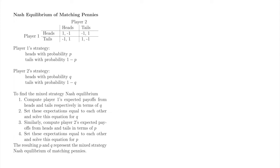If a player is not indifferent — say, player 1 strictly prefers heads to tails — player 1's best response is now heads, rather than her mixed strategy. The only way for mixed strategies to form a Nash Equilibrium is for players to be indifferent across their pure strategies. We'll find appropriate numerical values for P and Q by the four steps listed below the player's strategies.